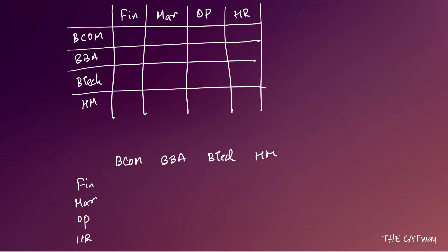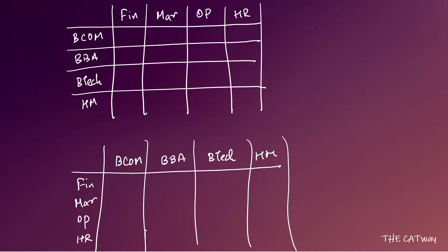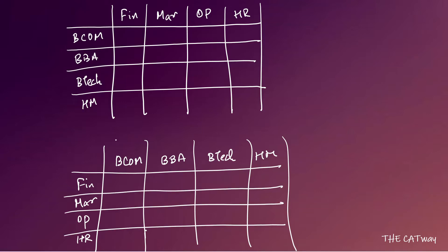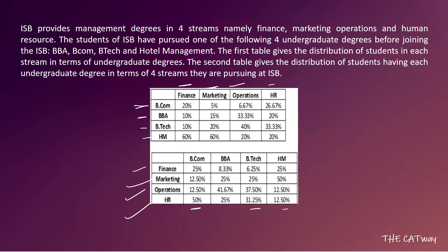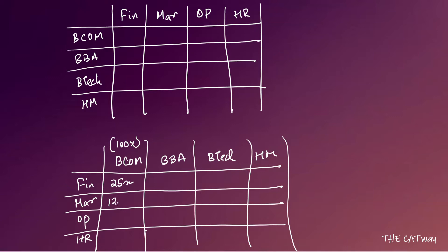With BCom total = 100x: 25% go to Finance → 25x; 12.5% go to Marketing → 12.5x; 12.5% go to Operations → 12.5x; and 50% go to HR → 50x. These are the BCom row values.